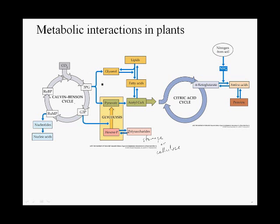3-phosphoglycerate can also exit the Calvin cycle and be converted to pyruvate or glycerol. Pyruvate can be converted to acetyl-CoA. Those carbons can then enter the citric acid cycle.